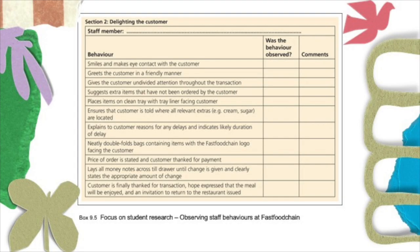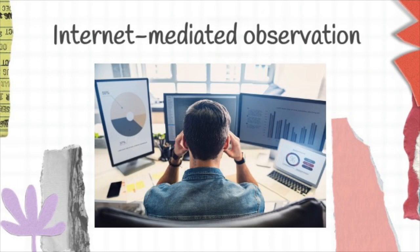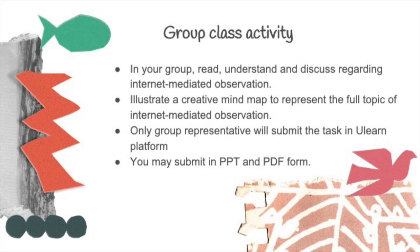Here is an example of predetermined behaviour coding on delighting the customer when workers work in a fast food chain. The internet allows access to a huge amount of data that enables researchers to conduct internet-mediated observation. Please conduct the following group class activity: in your group, read, understand, and discuss internet-mediated observation from the textbook. Illustrate a creative mind map to represent the full topic of internet-mediated observation. Only group representatives will submit the task in the uLearn platform, in PowerPoint or PDF form.